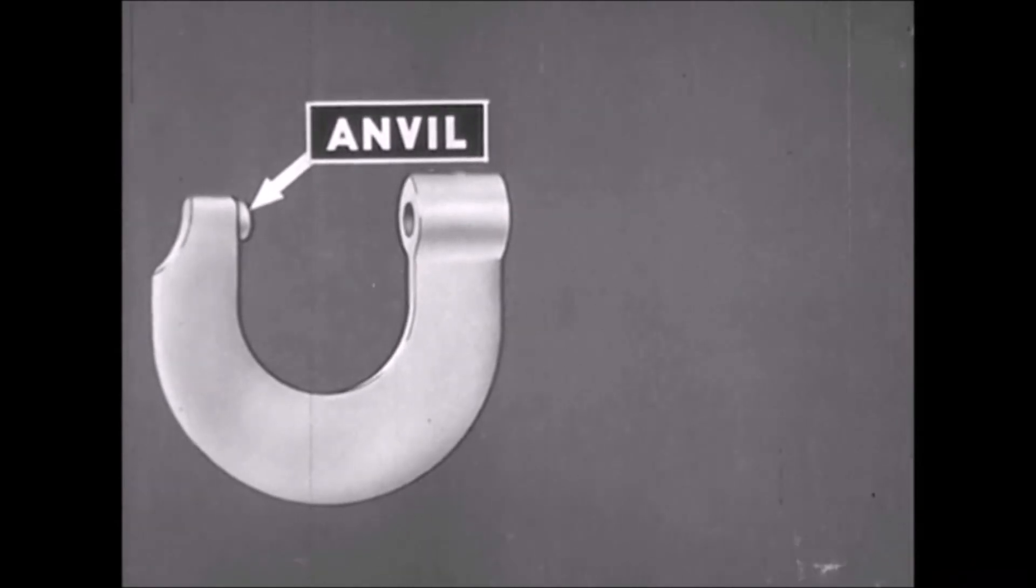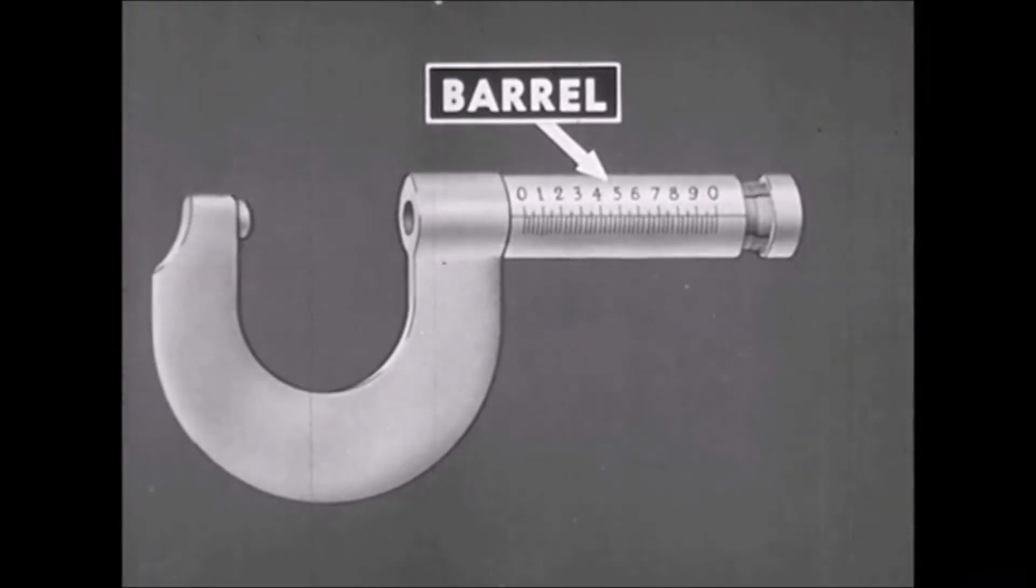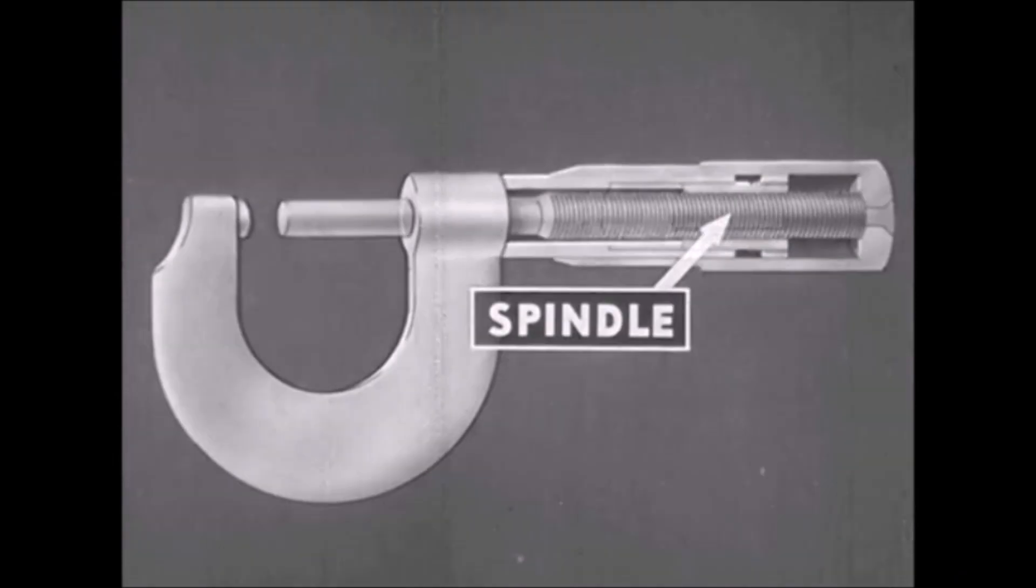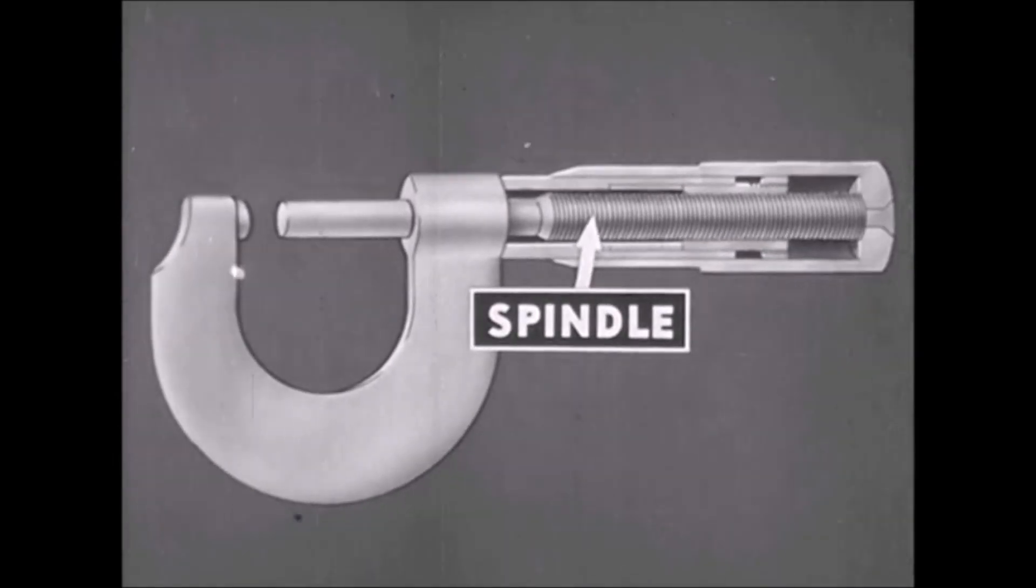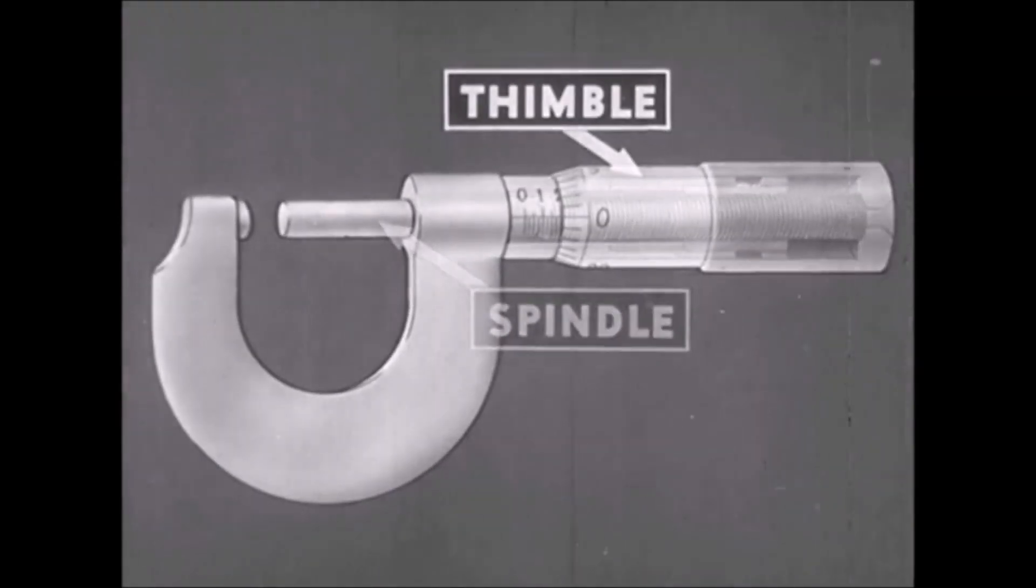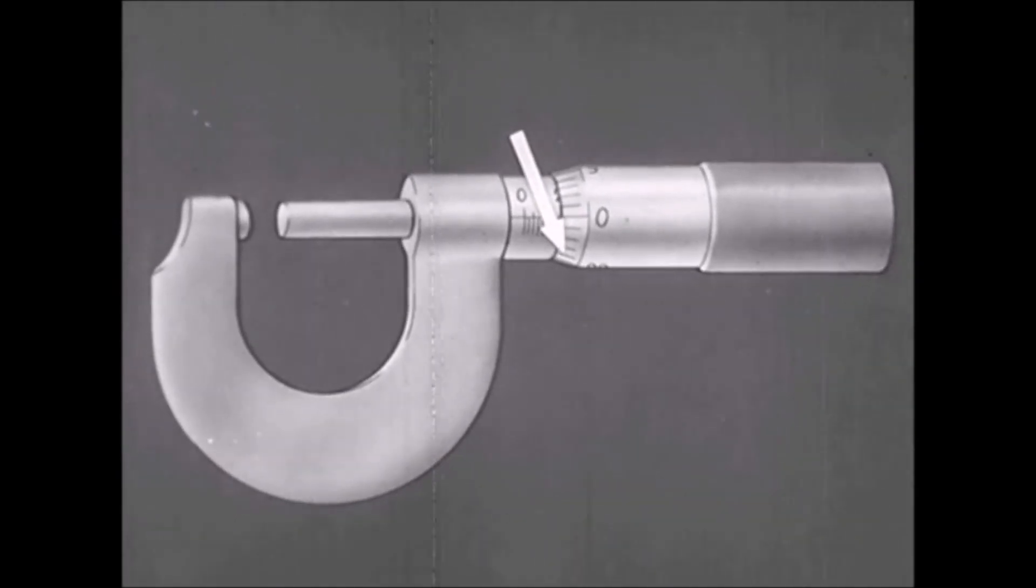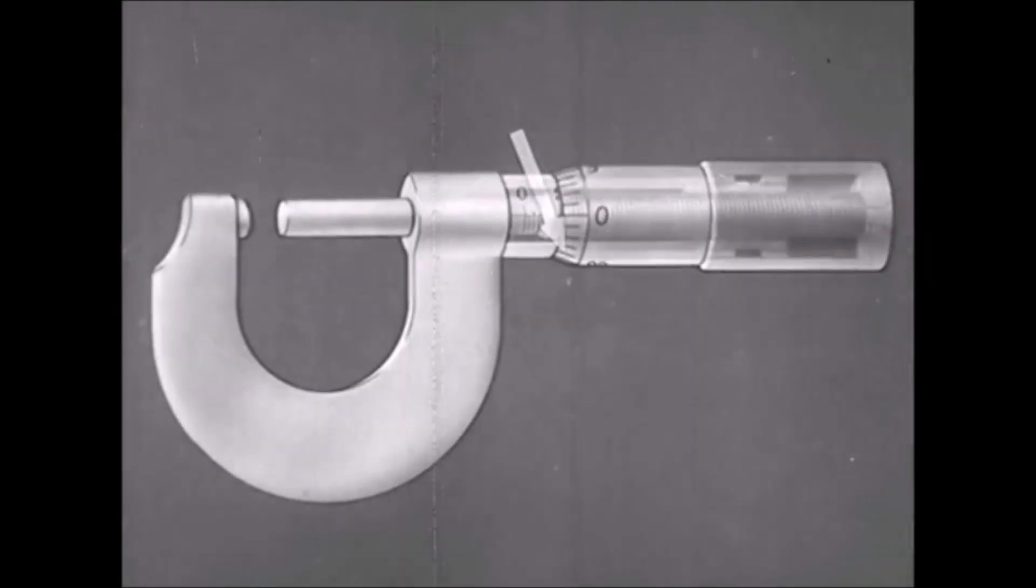This frame supports the barrel, which has a scale graduated in 25 one-thousandths of an inch. Inside this barrel is an internal screw. Engaging the barrel screw is one end of a hardened steel spindle. The thimble is part of the spindle assembly and contains a scale graduated to represent one one-thousandth of an inch for each division.